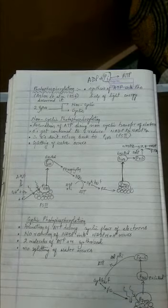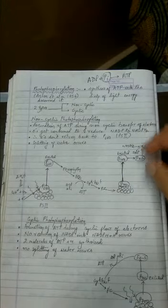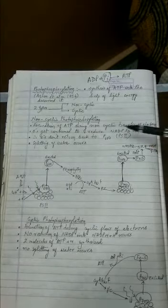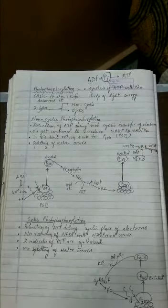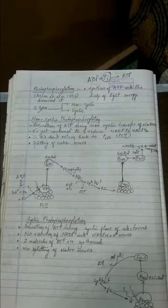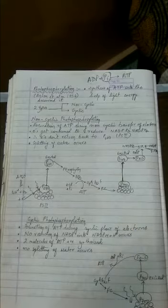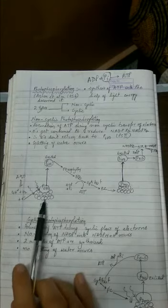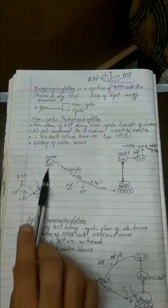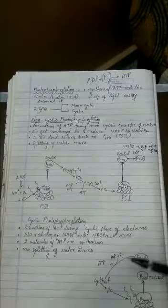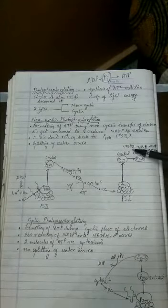So the formation of ATP during the non-cyclic transfer of electrons. Non-cyclic means it is not coming back. It's called as non-cyclic photophosphorylation. Electrons get consumed in this process. Now you can see here, photosystem second gets excited and loses electron. Electrons are shifted to photosystem first. And this photosystem first will lose its electron finally to NADP.